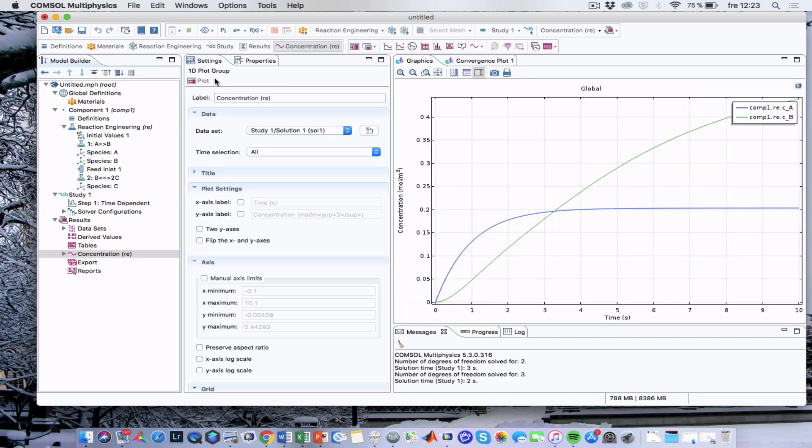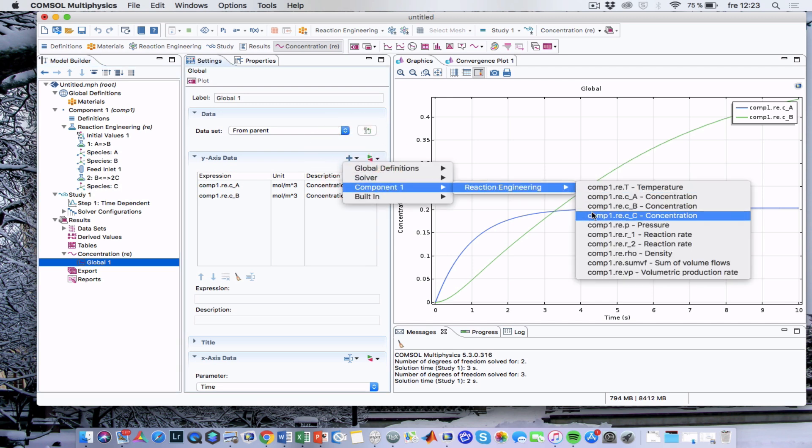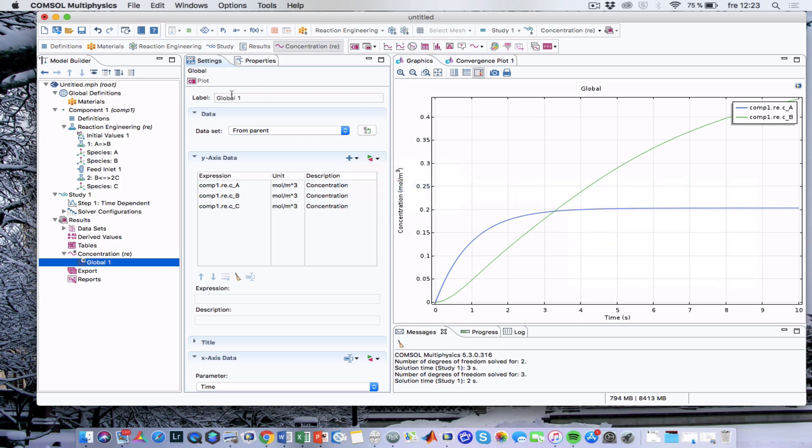However, now we see that we cannot find the concentration of C in our diagram. And in order to show concentration of C, we need to go to Concentration, to Global, and then add the concentration of C to the list of variables that are displayed in the plot. And then we can just re-plot.